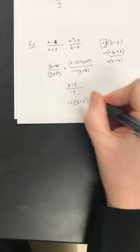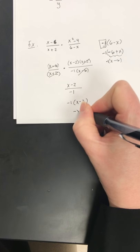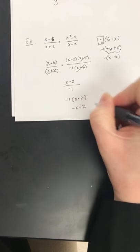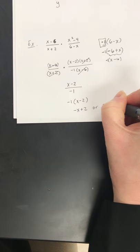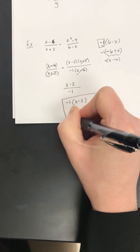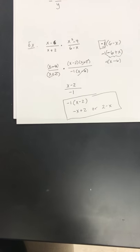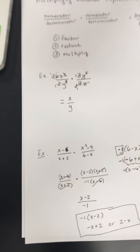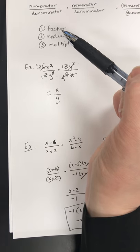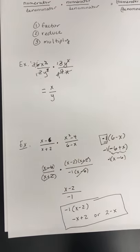It's a little neater. If you wanted to, you could distribute your negative, and you would have negative x plus 2, or you could have 2 minus x. So all of these answers would be acceptable. So remember, when you multiply rational expressions, you want to try to factor, reduce, and then multiply.